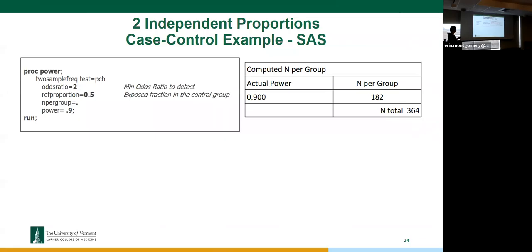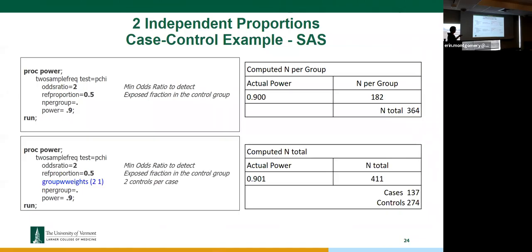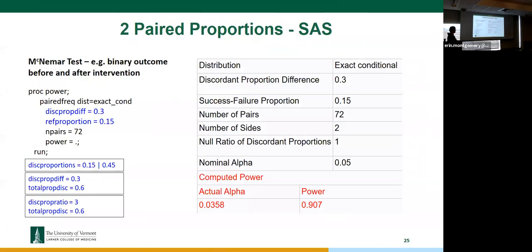For case-control studies, the effect size input would typically be the odds ratio you expect to detect — the minimum odds ratio you'd want to call statistically significant. This example in Stata outputs N per group, so you'd double it to get total sample size. If you have unequal groups — for example, two controls per case — your N will increase because one-to-one is the most efficient design. It goes up from 364 to 411 with a two-to-one ratio.